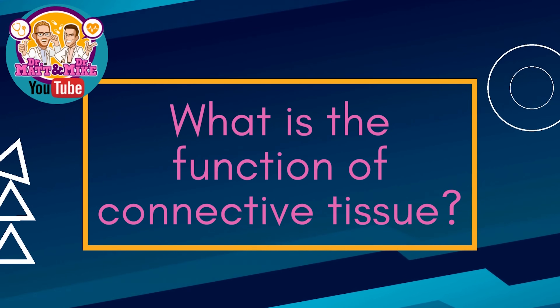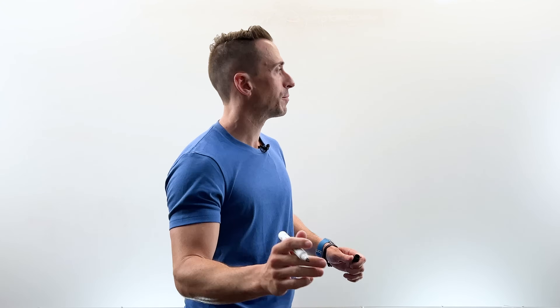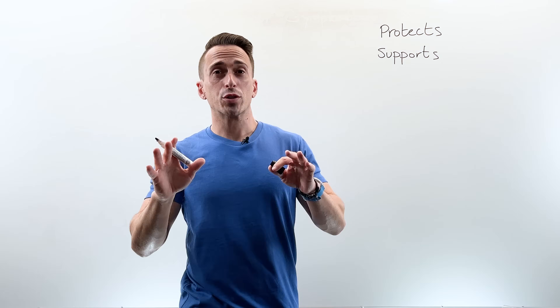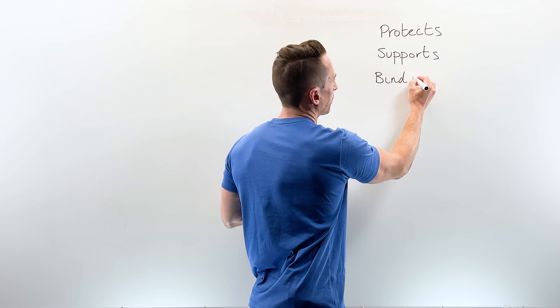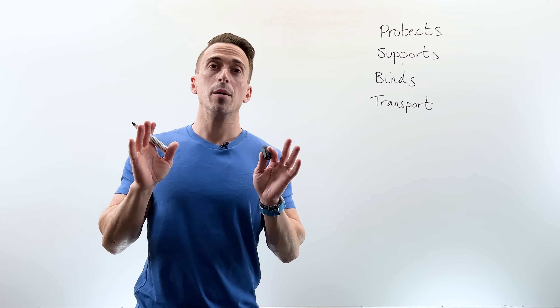In this video we're taking a look at connective tissue — the function of connective tissue, the different types, and also the cellular anatomy of connective tissue, which we call histology. There are five functions of connective tissue that you need to know. The first is that it protects. Second is that it supports. It also binds. It can transport stuff. And it plays a really important role in immunity.